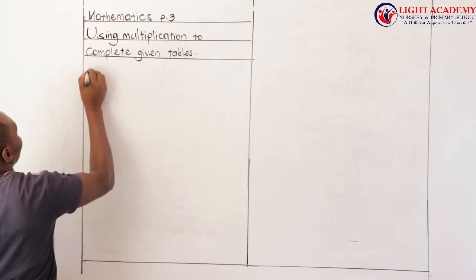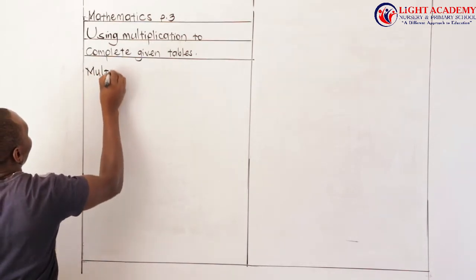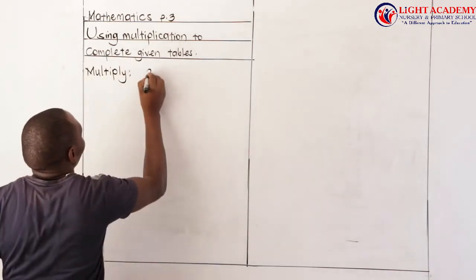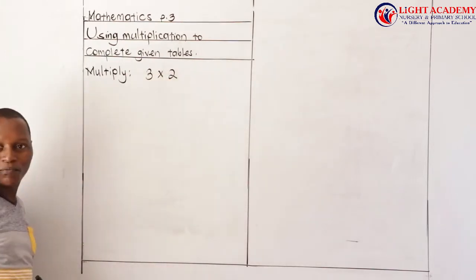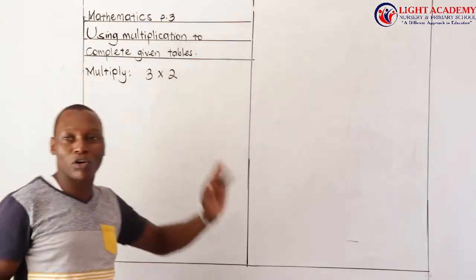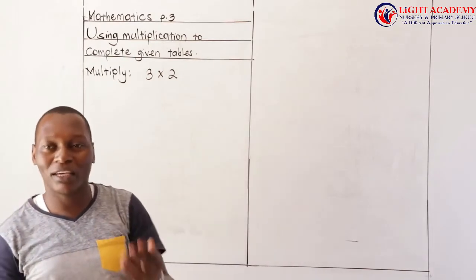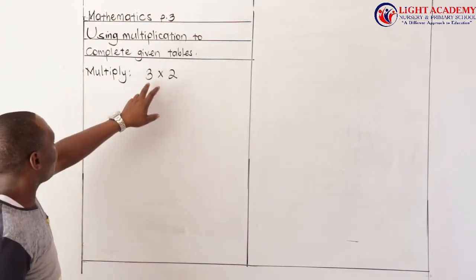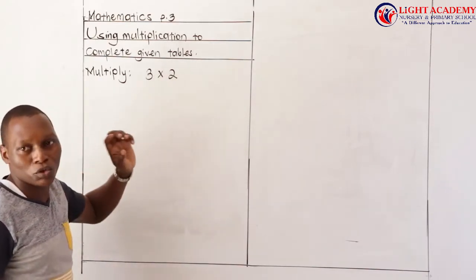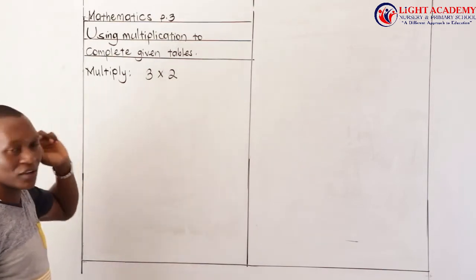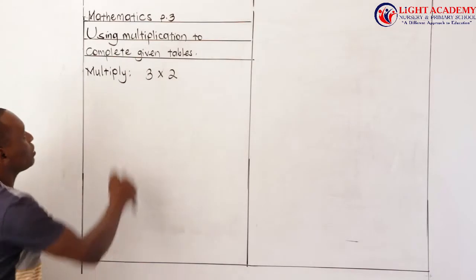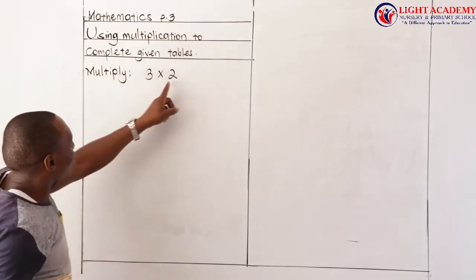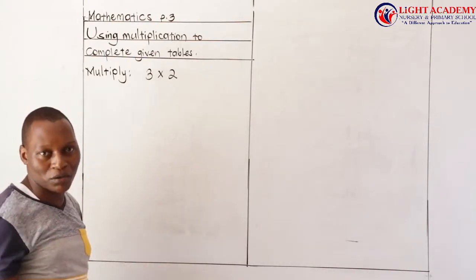Let's revisit this. They can say multiply three by two. Remember, we said multiplying numbers is the same as getting the product of numbers. They are saying three multiplied by two. The first number tells us the number of groups, and the second number counts the items per group.